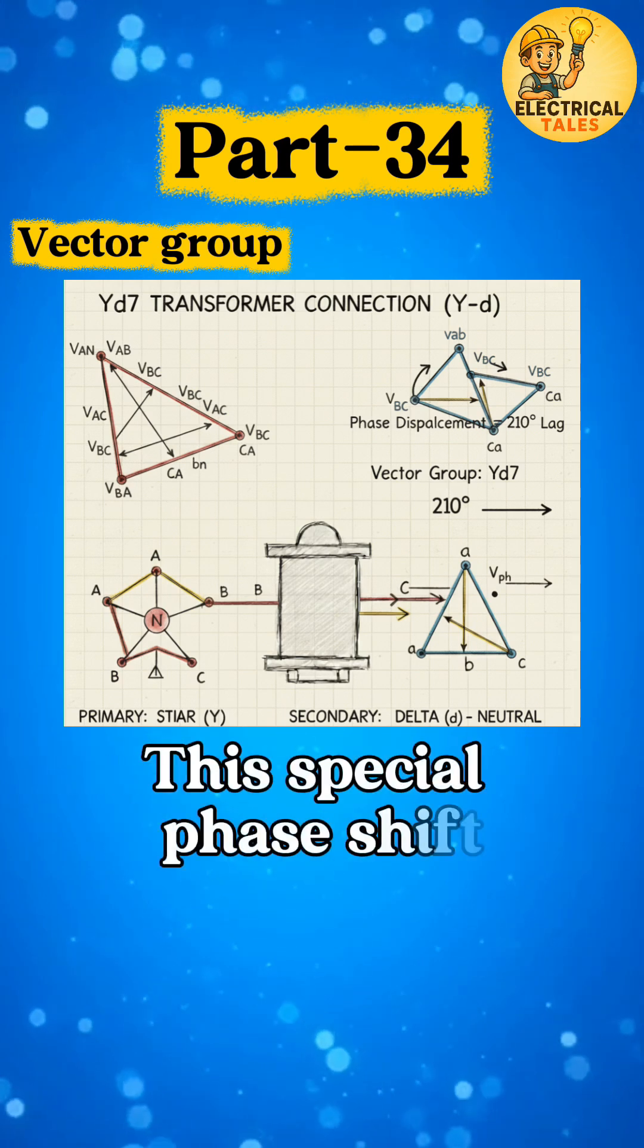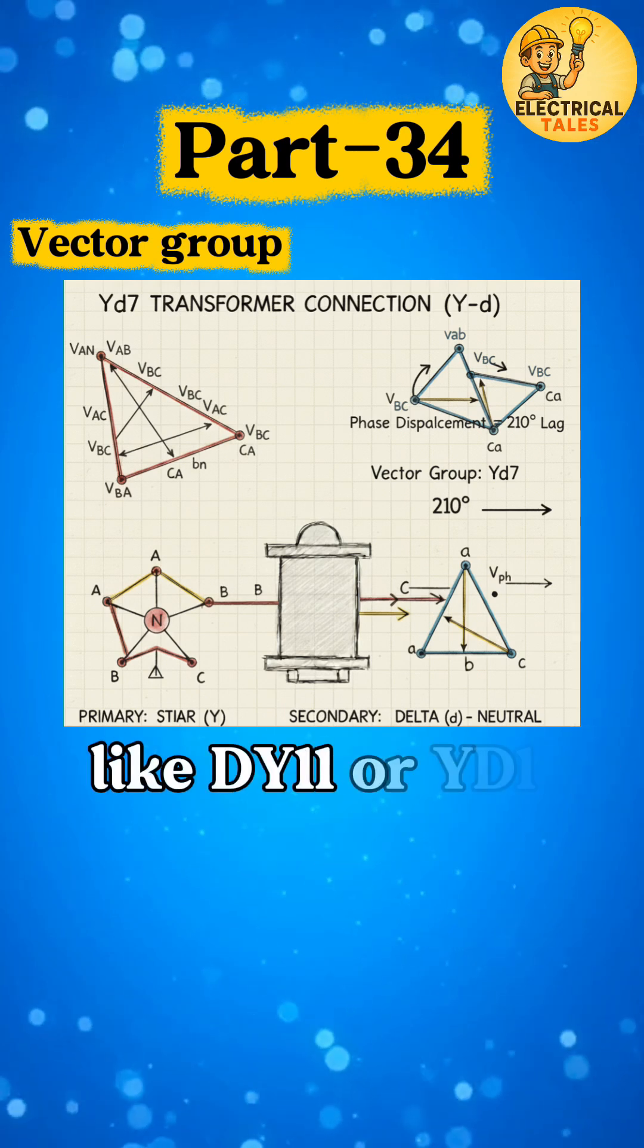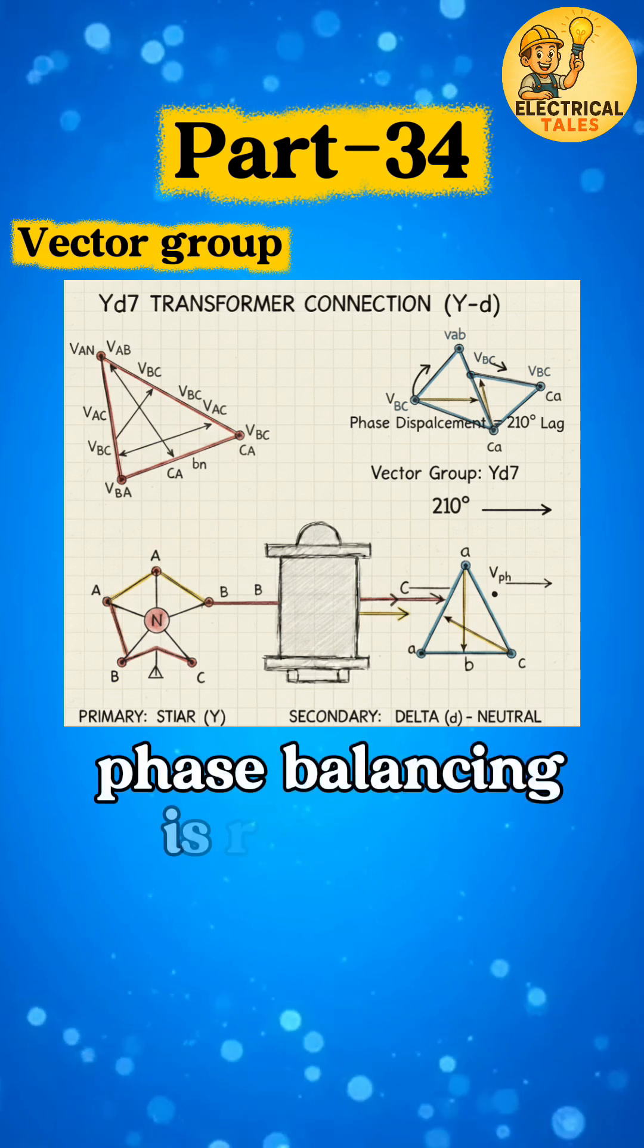This special phase shift makes YD7 suitable for parallel operation with other vector groups like DI11 or YD1 when perfect phase balancing is required.